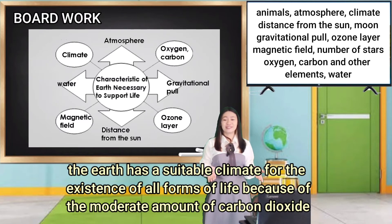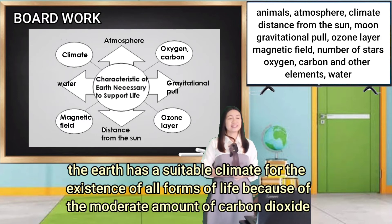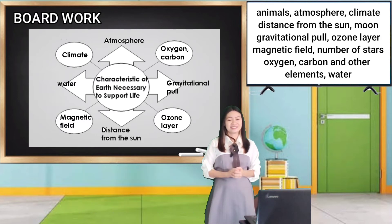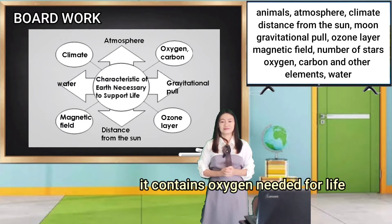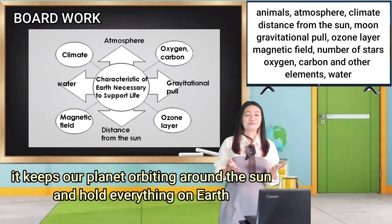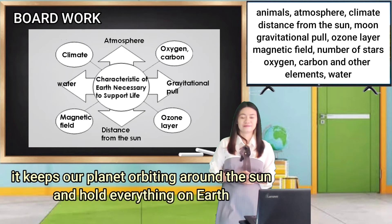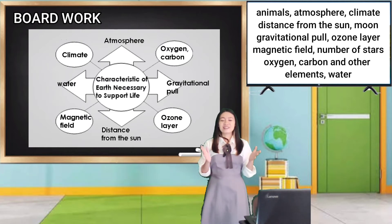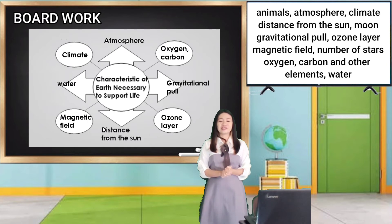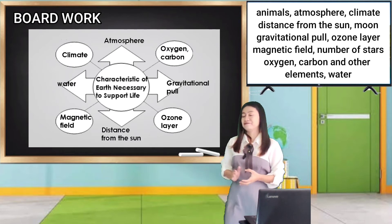And the water? Dennis? It contains oxygen needed for life. How about the gravitational pull? It keeps our planet orbiting around the sun and holds everything on Earth. Very good! Again, let's read the characteristics of the Earth that are necessary to support life.